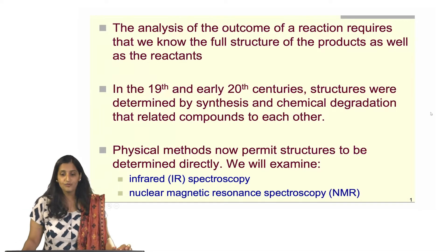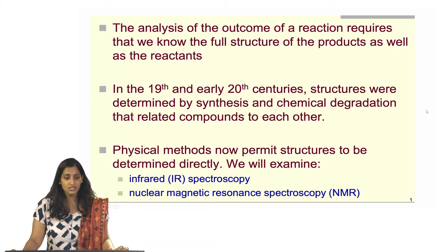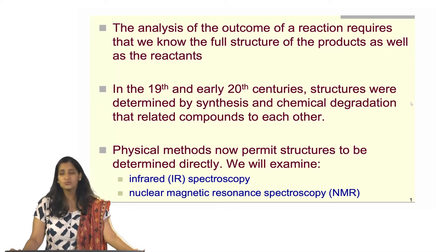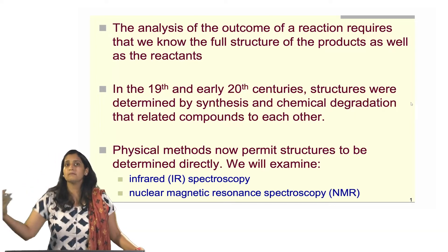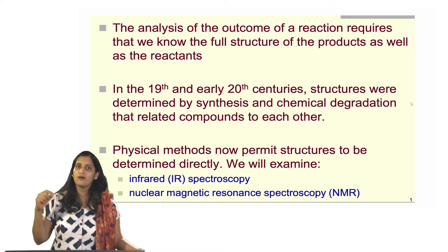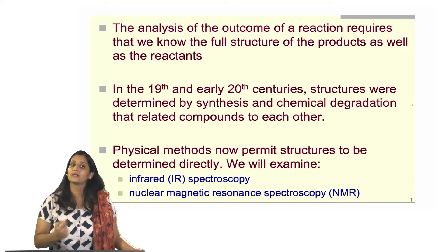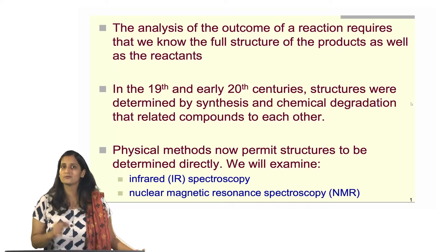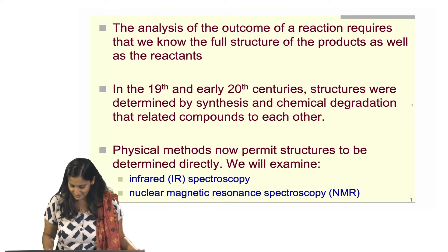We really want to know what is the product of our reaction. Earlier in the 19th and 20th centuries people used to try chemical degradation and do various chemical tests to figure out if they had really formed the compound. But nowadays because of the advance of technology we do not rely on those things — we instead have spectroscopic techniques. I am going to talk about infrared spectroscopy today and we are going to see how it helps us figure out if we have formed an alcohol or an alkene.